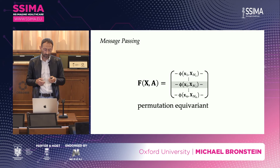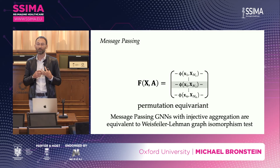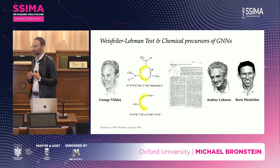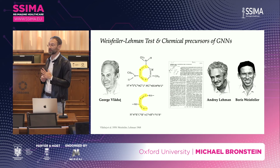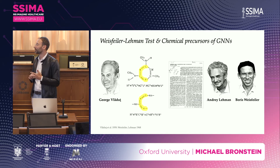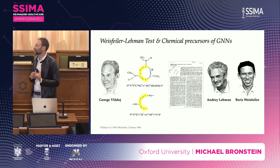The choice of the aggregation function is extremely important. If Phi is an injective function, we can formally relate message passing graph neural networks to graph isomorphism testing — what is called the Weisfeiler-Lehmann test. This is an algorithm devised in the late 1960s by André Lehman and Boris Weisfeiler trying to test whether two graphs are isomorphic. Interestingly, the problem itself came from chemistry — pioneered in particular by George Vladut, a Romanian chemist working in the Soviet Union, who was a pioneer of what is now called chemo-informatics.